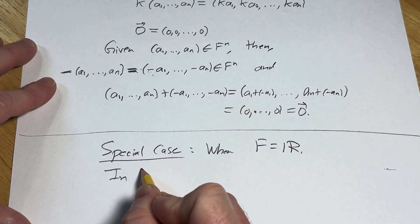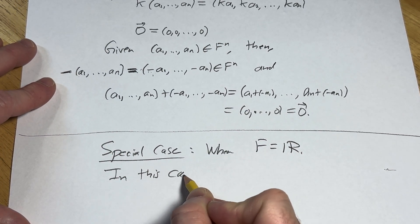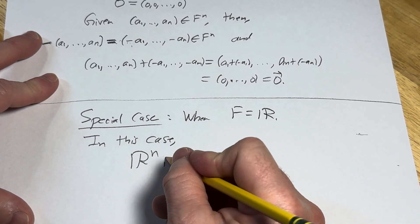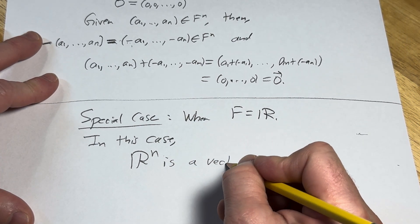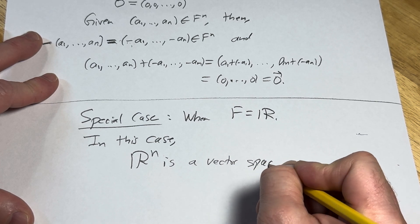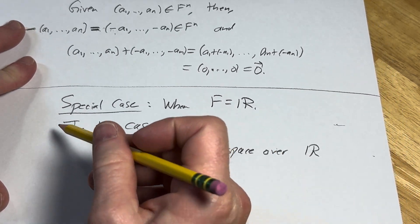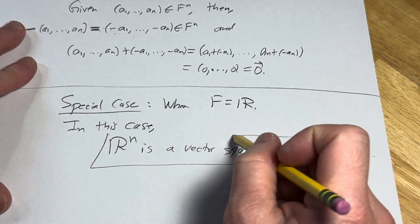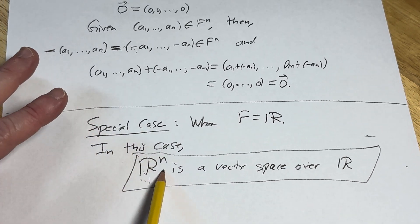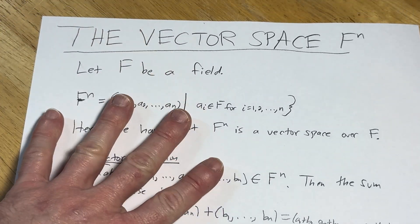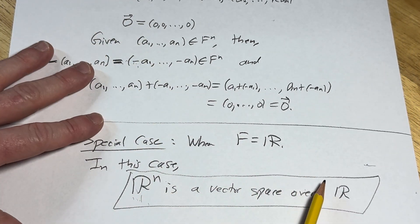so in this case, what happens is that R^n is a vector space over R. And this is perhaps the most important example. This is a vector space that's studied heavily in analysis and stuff. So this is a more general example of this.